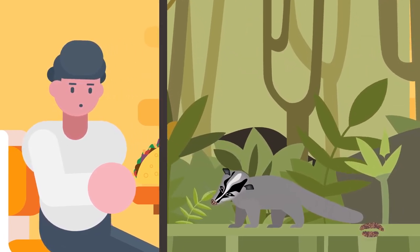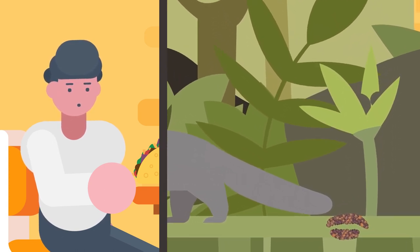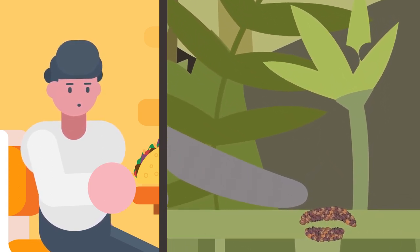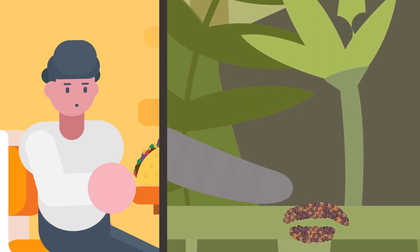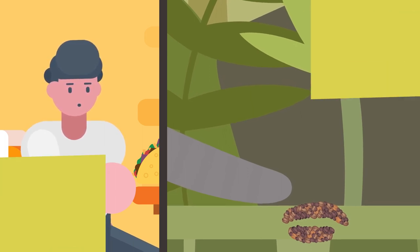However, he did not want to eat even one taco after he learned civet coffee is made of coffee cherries that are partially digested and pooped out by jungle animals called Asian palm civets.